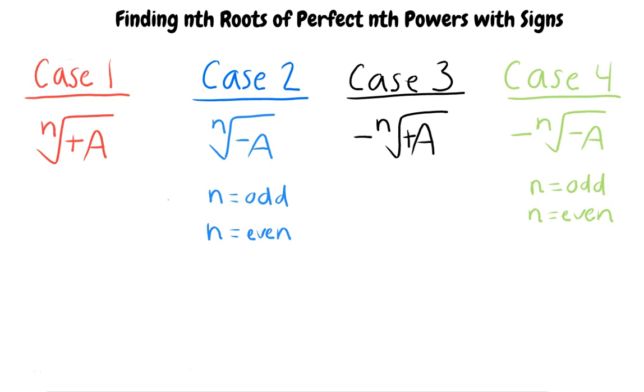These are the four cases that we are going to examine within this video. Notice that the cases differ by the number within the radical being either positive or negative and whether or not there is a leading negative outside of the radical. Also, note that case 2 and case 4 have two subcases each. This is because the number within the radical is negative, so depending on whether n is odd or even, the answer will differ.